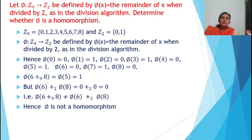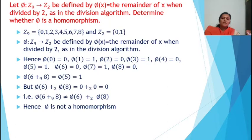Here phi is from Z9 to Z2 defined by phi(x) = remainder of x divided by 2. Hence phi(0) = 0, phi(1) = 1, phi(2) = 0, phi(3) = 1, phi(4) = 0, phi(5) = 1, phi(6) = 0. Now consider phi(6 +₉ 8): 6 + 8 = 14, and 14 divided by 2 gives remainder 0, so phi(14 mod 9) = phi(5) = 1.